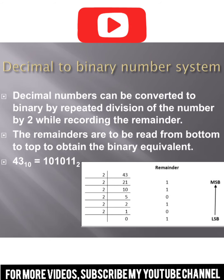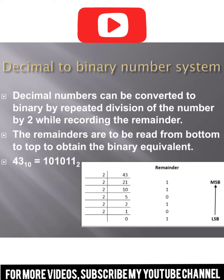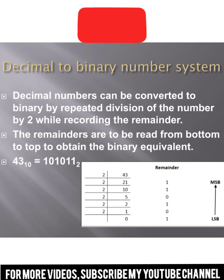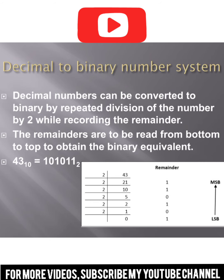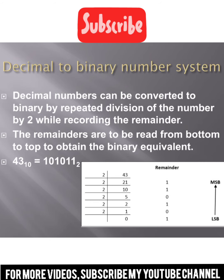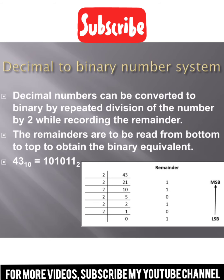A decimal number can be converted to binary by repeated division of the number by two, while recording the remainder. This means we take the decimal number and divide it — if we convert decimal to binary, we take the LCM.